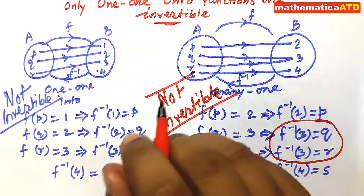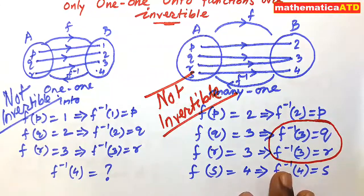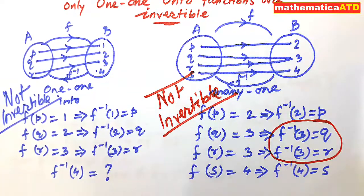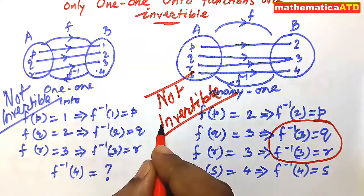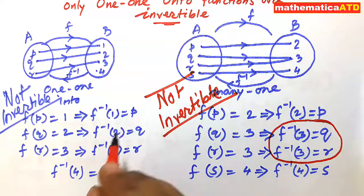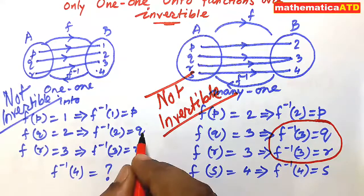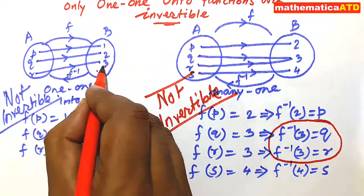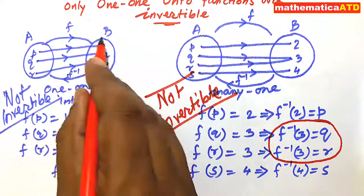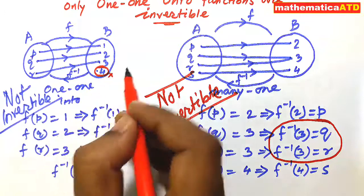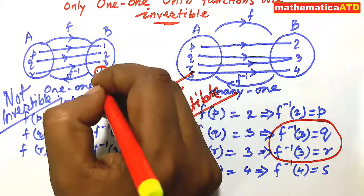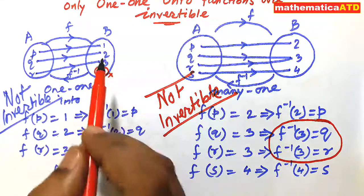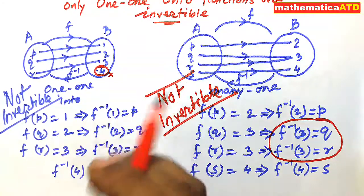So, it is clear that only those functions are invertible which are neither into nor many-one — that is, which are one-one and onto. This function may be one-one onto if you omit the extra value from set B, meaning if the range and codomain are equal, then the function is one-one and onto. Only in this case will the function be invertible.